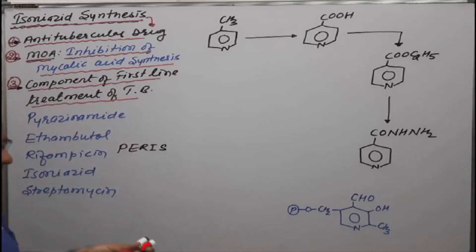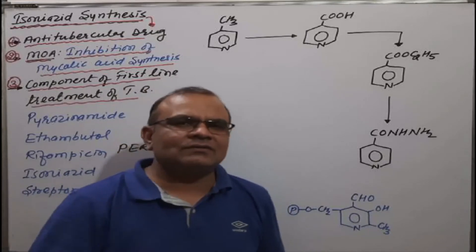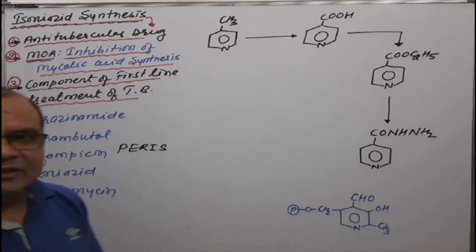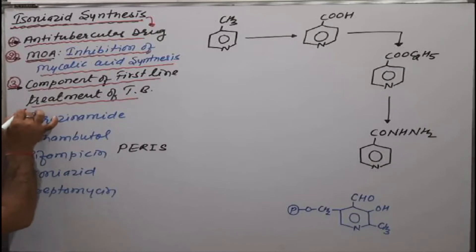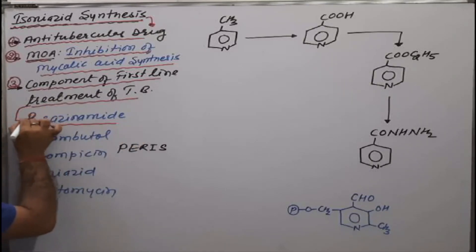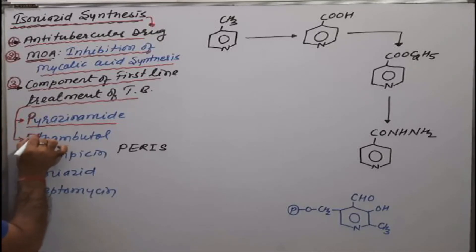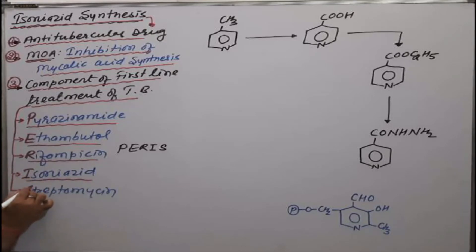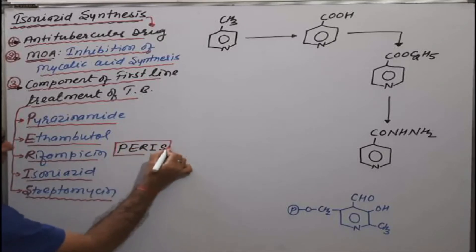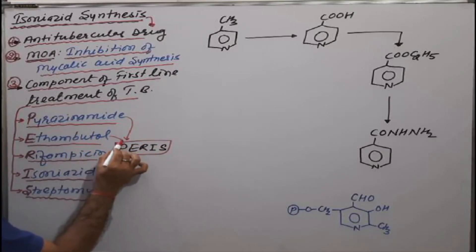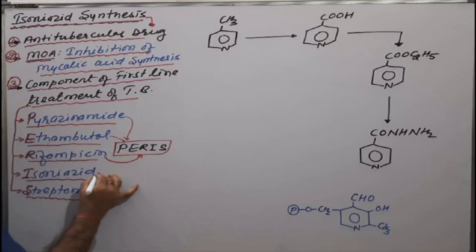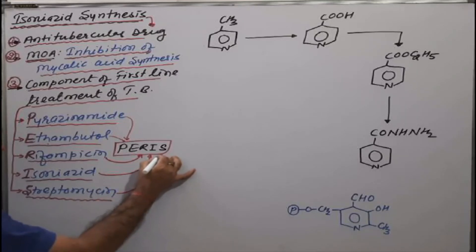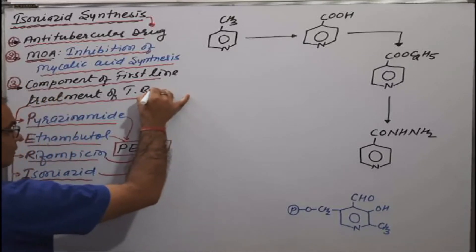Isoniazid is a component of first-line treatment of TB. First-line drugs are the preferred choice for treatment of tuberculosis caused by Mycobacterium tuberculosis. The first-line components are: P for pyrazinamide, E for ethambutol, R for rifampicin, I for isoniazid, and S for streptomycin — remembered as the mnemonic PERIS.